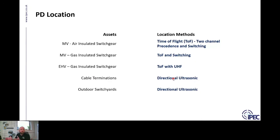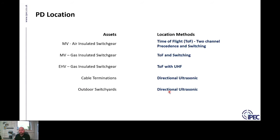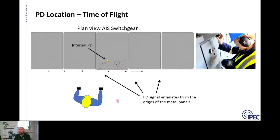For cable terminations, we use ultrasonic directional sensors. PD can be detected inside cable terminations — pointing your ultrasonic sensor gives a 30-degree window, making it very directional.